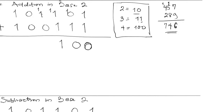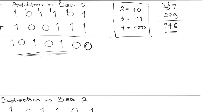1 plus 1 is 2. We can't write 2, so we go to our reference — that is 10, so we write 0 and carry 1. And 1 plus 0 is 1, then 1 plus 1 is 2. We can't write 2, so we write 2 in base 2 which is 10. That is how we do it.